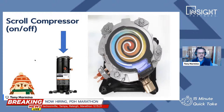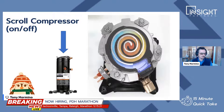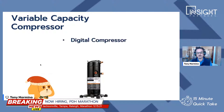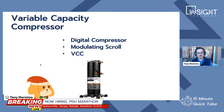What do we do when we want to modulate the compressor? We have two options. First, we'll look at the variable capacity compressor, which has been out and very popular compared to VFD compressors. VFD scrolls are relatively newer. The variable capacity compressor is also called a digital compressor, a modulating scroll compressor, or VCC for short — variable capacity compressor. All three names refer to the same device.